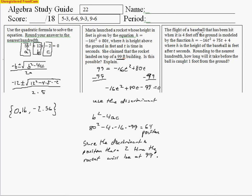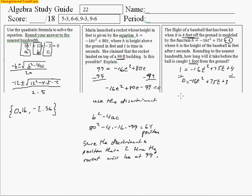The next problem: the flight of a baseball hit 4 feet off the ground is modeled by this function — the 4 representing the initial height, hit at 75 feet per second. H is the height in feet and t is the time in seconds. Rounding to the nearest hundredth, how long will it take before the ball is 1 foot off the ground? We substitute 1 in for h, giving 1 equals negative 16t squared plus 75t plus 4. Taking away the 1 from both sides leaves negative 16t squared plus 75t plus 3 equals 0. I'll use the quadratic formula, and I'm thinking it'll be the minus sign.